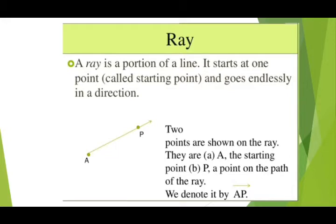A ray is a portion of a line. It starts at one point and goes endlessly in one direction. यानि कि ray जो होता है वो एक line का ही portion है, वो one point से start होता है और उसका end नहीं होता — वो infinity तक जा सकता है। Two points are shown on the ray: A is the starting point and P is a point on the path of the ray. It is denoted by AP.